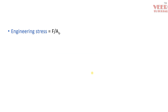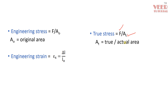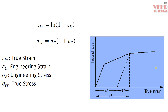Engineering stress is F divided by original area A, and engineering strain is delta L divided by L. True stress is force divided by the true (actual) area after the load is applied. True strain is given by the natural log of final length divided by original length. The conversion is: true strain = ln(1 + engineering strain), and true stress σ_t = σ_e × (1 + engineering strain).